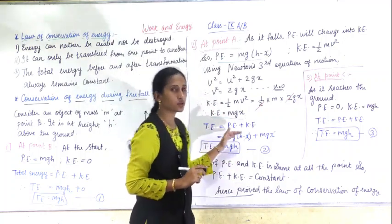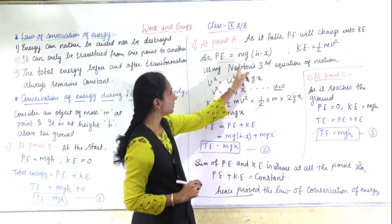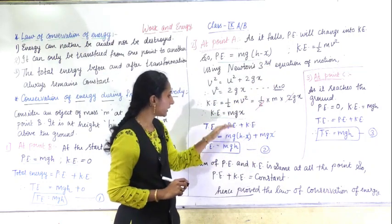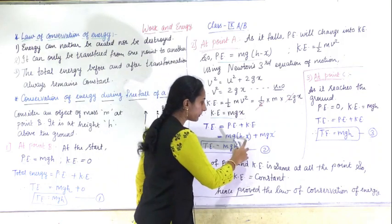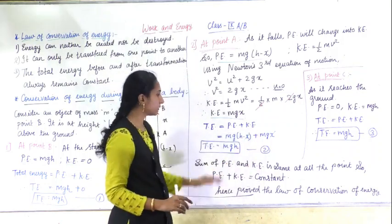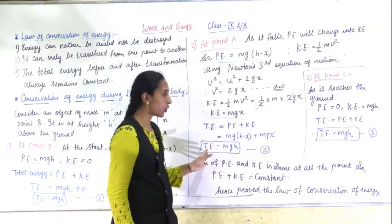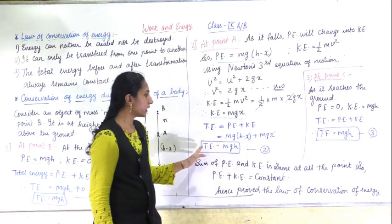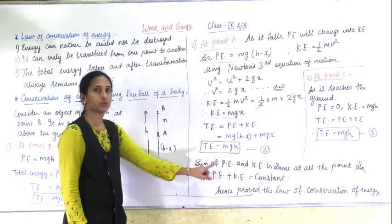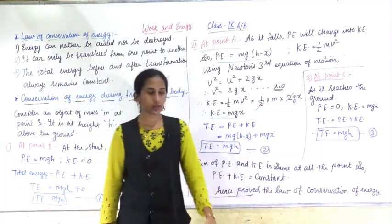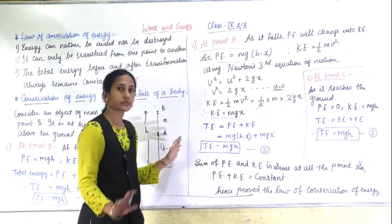Total energy at point A = potential energy + kinetic energy = MG(H − X) + MGX. Here, the −X and +X cancel out, leaving total energy = MGH. This is equation number two. Equation one is MGH and equation two is also MGH, so the total energies at points B and A are the same.